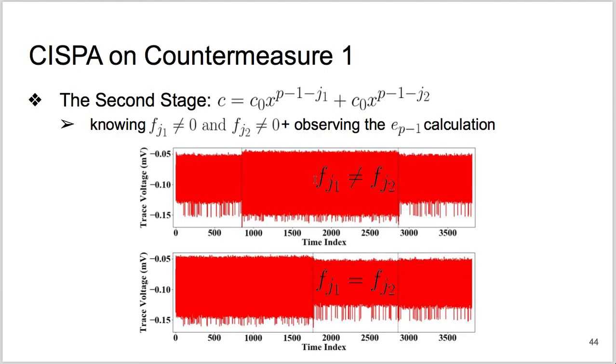At the end of the chosen input SPA, whether on countermeasure 1 or on countermeasure 2, we need and exploit the error detection mechanism of NTRU Prime to choose from the two final hypotheses.